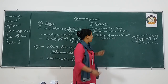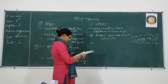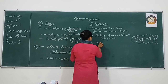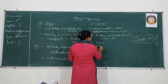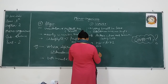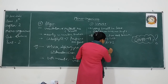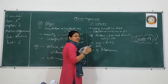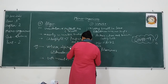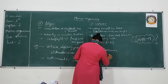Viruses multiply in number only when they enter inside a living cell. Viruses cause many diseases like HIV — HIV is a virus that causes AIDS. Another example is the polio virus, which causes polio disease. The next example of a virus is bacteriophage.